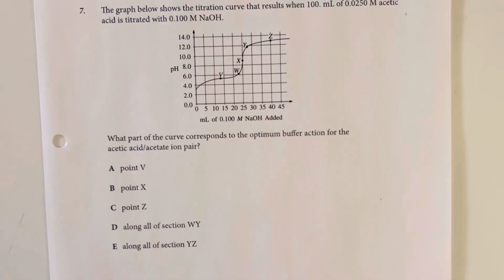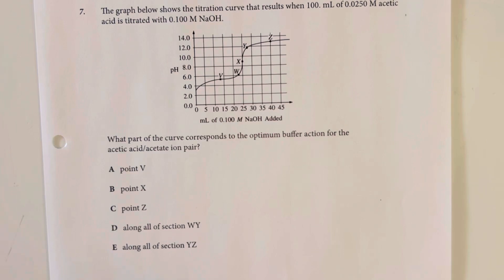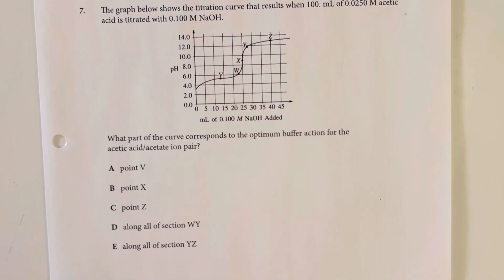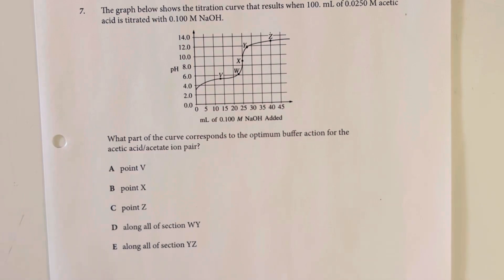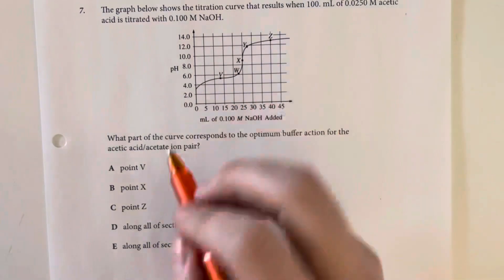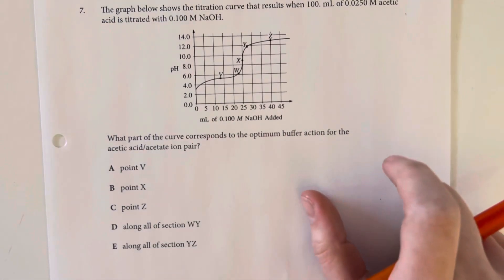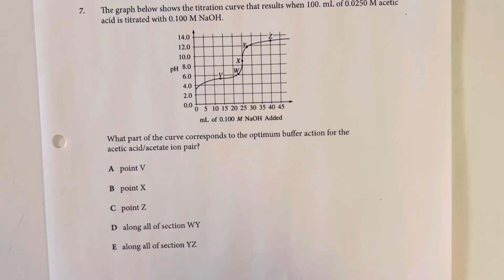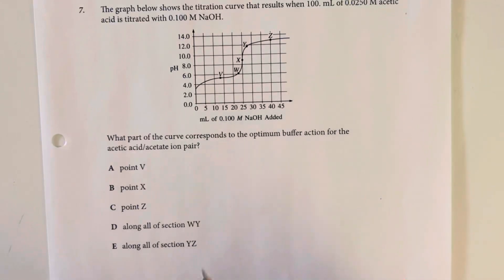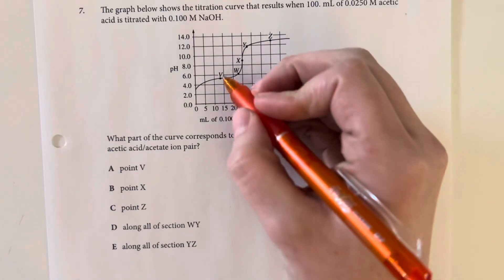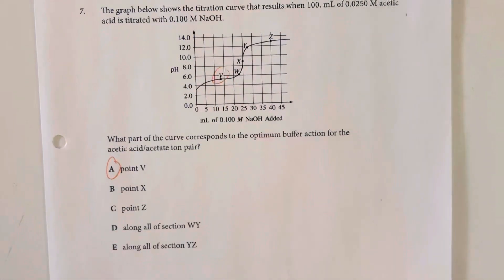The graph below shows a titration curve that results when 100 milliliters of 0.025 molar acetic acid is titrated with 1 molar sodium hydroxide. We are looking for optimum leveling off — where the acetate is doing a good job at not allowing the pH to rise to a basic pH. That would be point V.